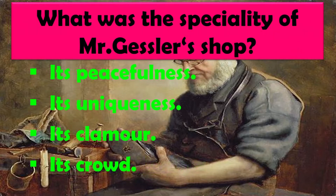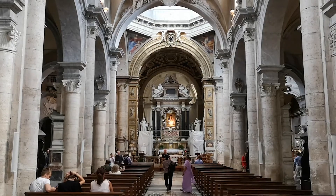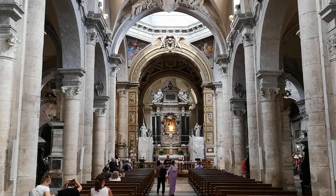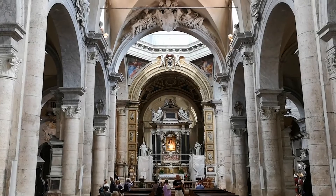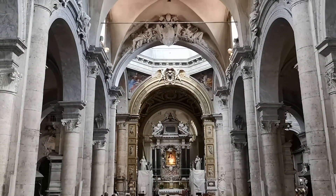What was the speciality of Mr. Gessler's shop? Mr. Gessler ki dukan ki kya vishishtata thi? Options: Its peacefulness — iski shanti, its uniqueness — iska anokha pan, its clamor — iska shor, its crowd — iski bheed. The right answer is its peacefulness. Lekhak ne bataya hai ke unki dukan mein jakar baithna ek church mein enter karne jaisa tha.